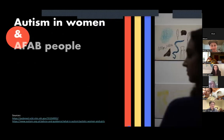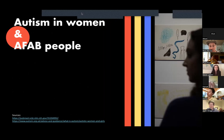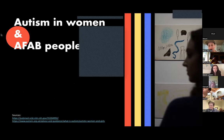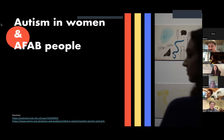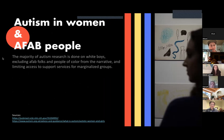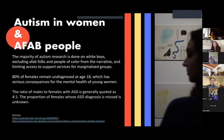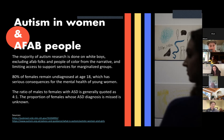Why is this important? Because autism manifests differently. Autism in women and AFAB people — assigned female at birth — is often overlooked. The majority of autism research is done on white boys, excluding AFAB folks and people of color, and limiting access to support services for marginalized groups. 80% of females remain undiagnosed at age 18, which has serious consequences for mental health. The ratio of males to females with ASD is generally quoted as four to one, but the proportion of females whose diagnosis is missed is unknown.